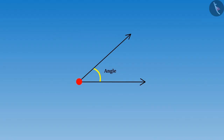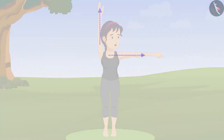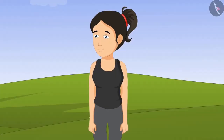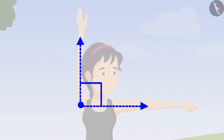Angle? But how? Do you remember what I had told you about the angles? When two lines join at one point, then an angle is formed between them. Suppose my two hands are two lines and my shoulder is the point where these lines are joined, then an angle is formed between my hands.